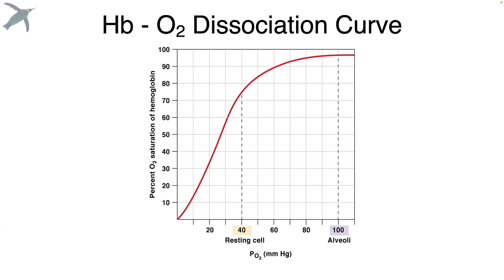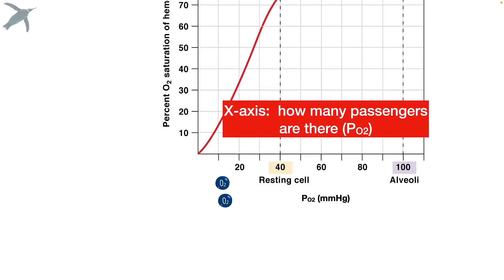And now we have the infamous hemoglobin oxygen dissociation curve. Let's do this. This curve describes the relationship between how much oxygen there is and how saturated hemoglobin proteins will be. Along the x-axis, this is PO2. That is how much oxygen is there around the hemoglobin that you're looking at.